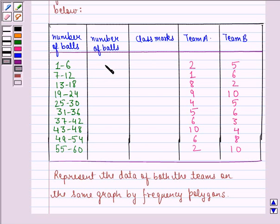So the continuous intervals would be 0.5 to 6.5, 6.5 to 12.5, 12.5 to 18.5.